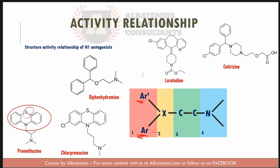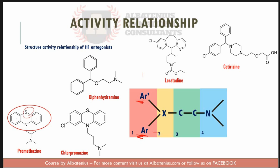The third group is the carbon chain. Most structures contain an ethylene chain. Extension or branching of this chain results in less active compounds. Homologation has played an important role in the development of neuroleptics and tricyclic antidepressants, such as chlorpromazine, which is a neuroleptic.